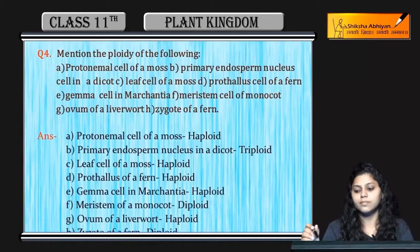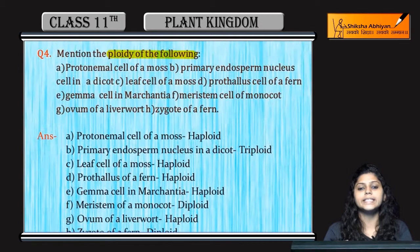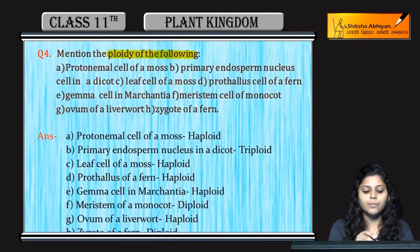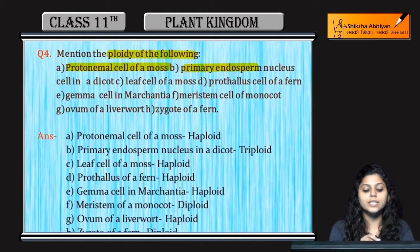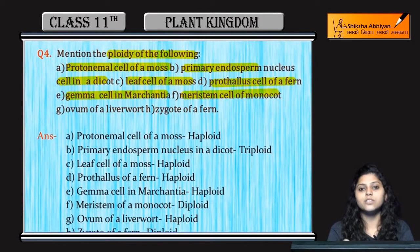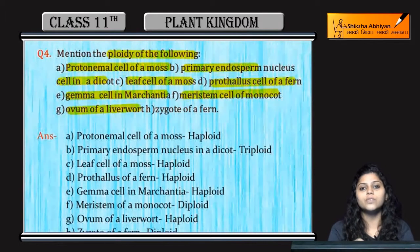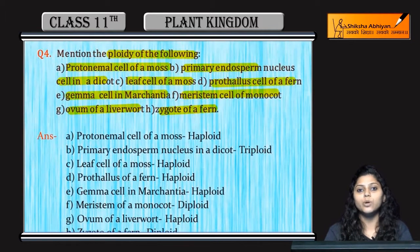The next question is: mention the ploidy of the following — protonema cells of mosses, primary endosperm nucleus, leaf cell of a dicot, prothallus cell of a fern, gamete cells in Marchantia, meristem cells of a monocot, ovum of a liverwort, and zygote of a fern.